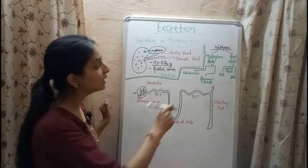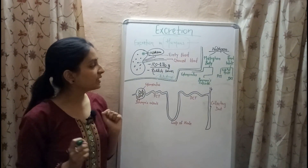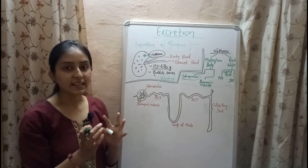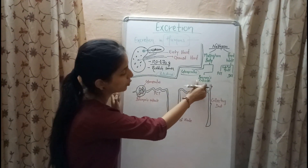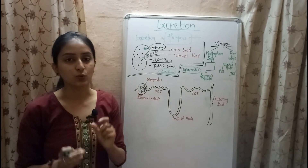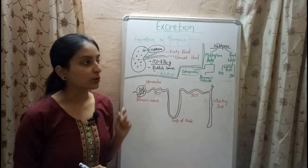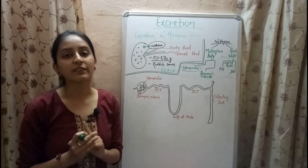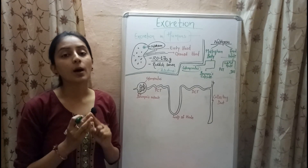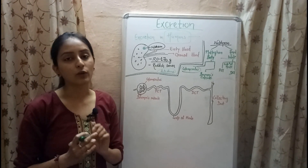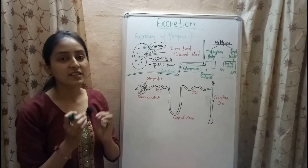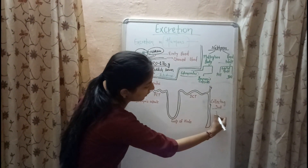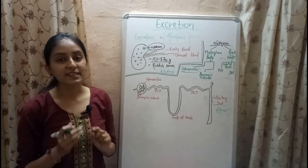There are two major parts of a nephron: the Malpighian body and the renal tubule. The Malpighian body consists of a network of capillaries known as the glomerulus, surrounded by a cup-like structure called Bowman's capsule. Together they form the Malpighian body, also known as the Malpighian corpuscle. The renal tubule is divided into three parts: the proximal convoluted tubule (PCT), the loop of Henle, and the distal convoluted tubule (DCT). These tubules transport urine from the Malpighian body to the collecting duct.